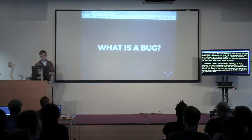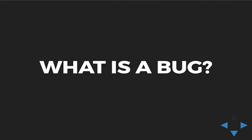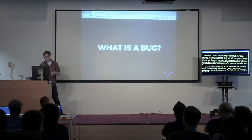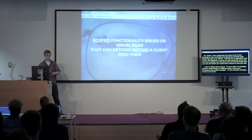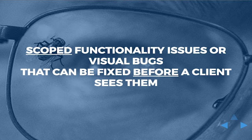The first thing before we really get into it is I want to define what a bug is, what a defect is. Because to your client it's probably going to mean things that are a lot different than it will to your developers, your project manager, and the business owner. There's a lot of ambiguity in the term defect or bug. So what we're talking about today are scoped functionality issues or visual bugs that can be fixed before a client sees them.